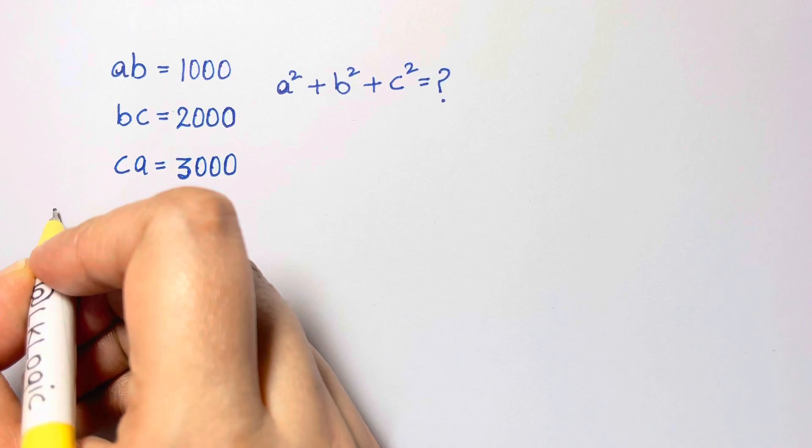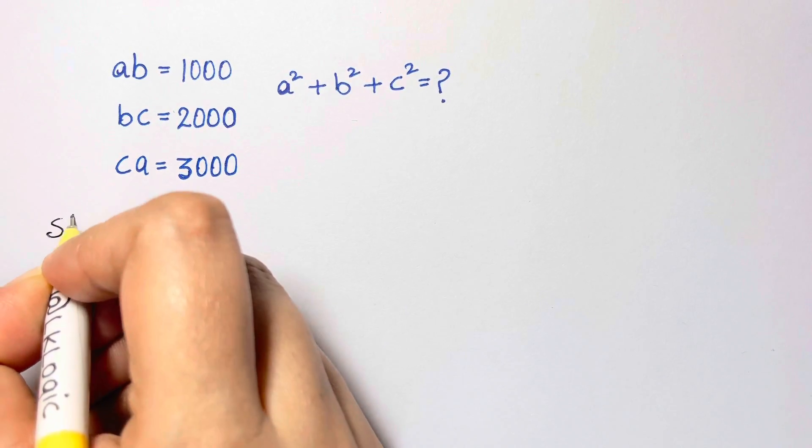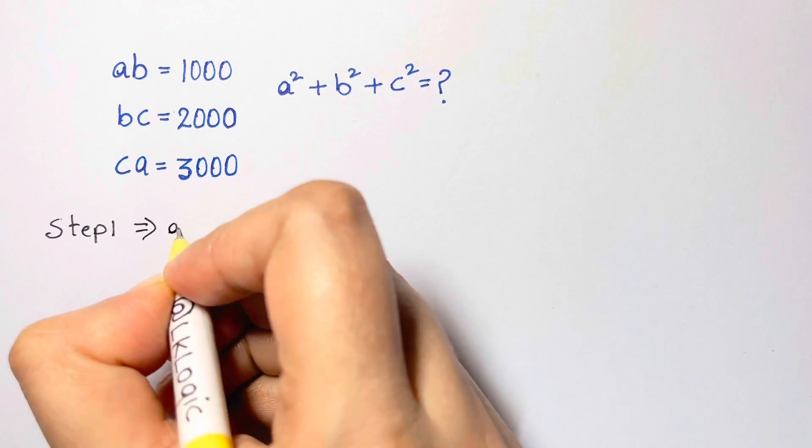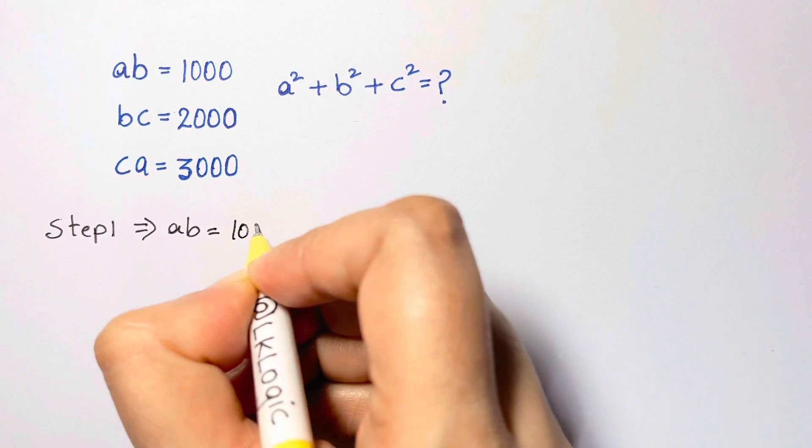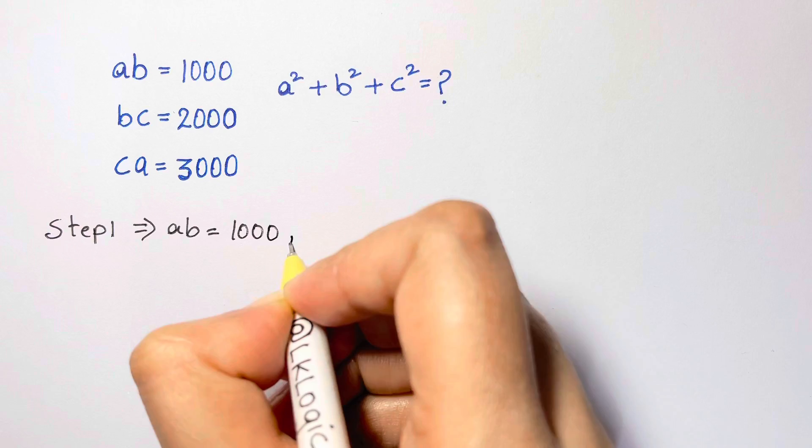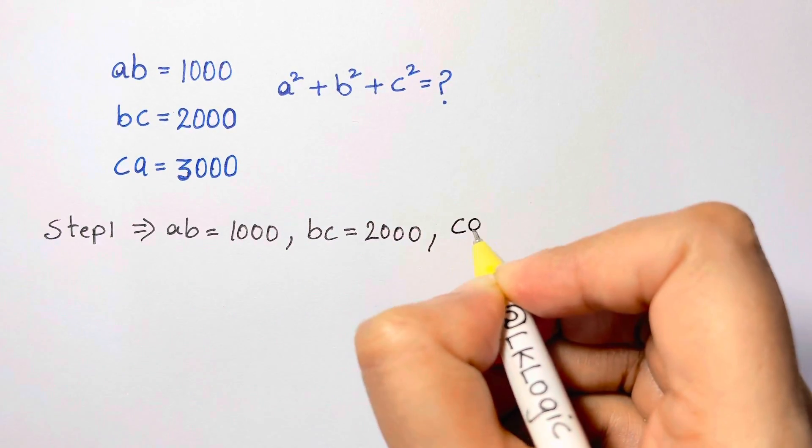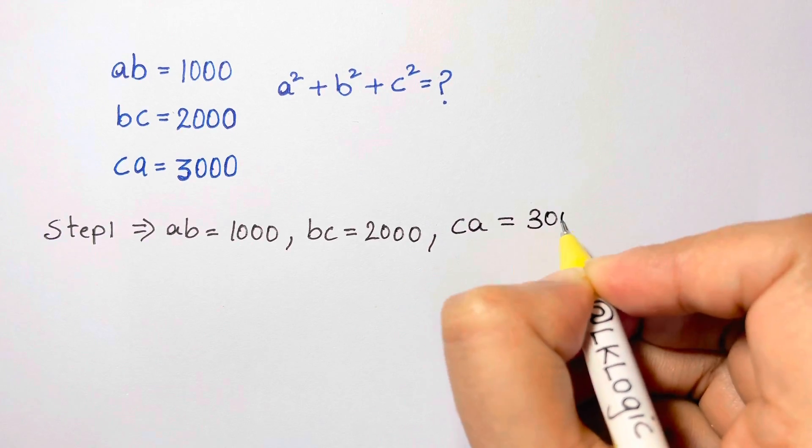So what's the first step we're going to do here is, step one. I'm going to write it, ab is given to us as 1000 and bc is given us 2000 and ca is given us 3000.